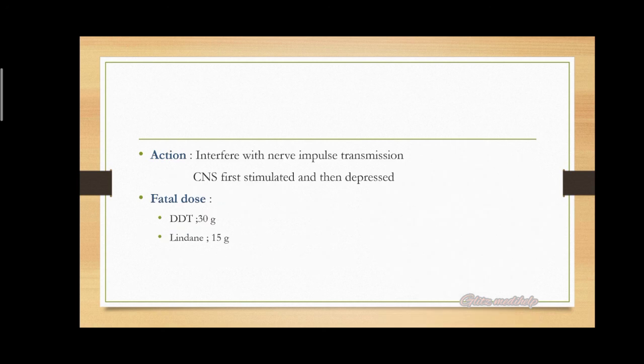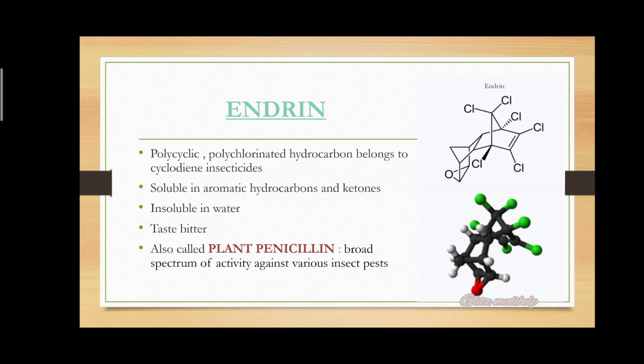Regarding mechanism of action: these organochlorins interfere with nerve impulse transmission — the CNS is first stimulated and then depressed. The fatal dose is the lethal dose at which the person will die. It varies for various compounds; for example, DDT is 30 grams and lindane is 15 grams.